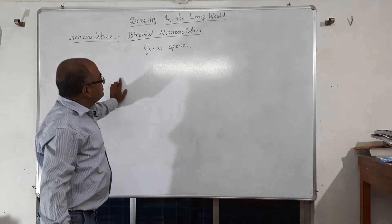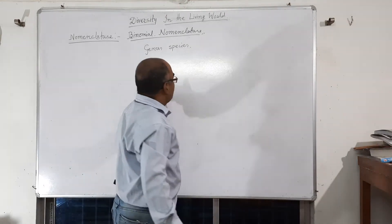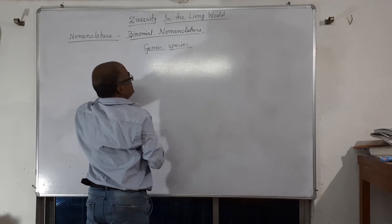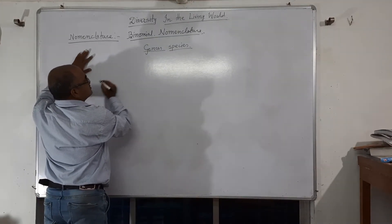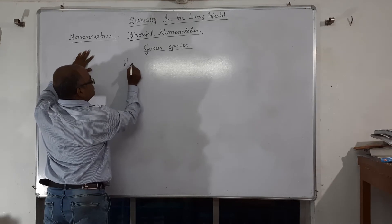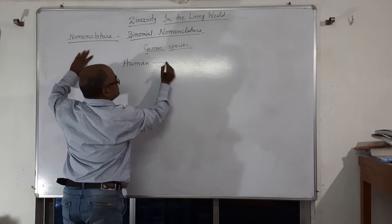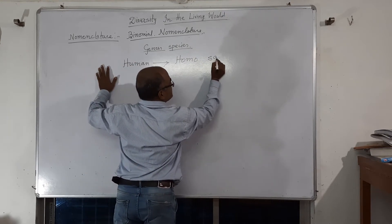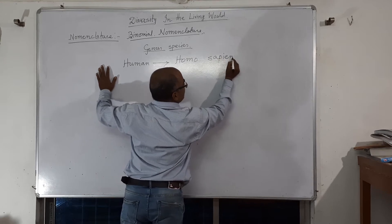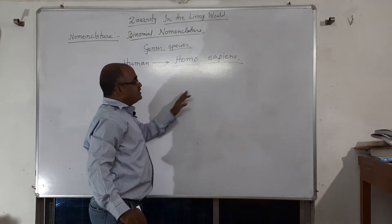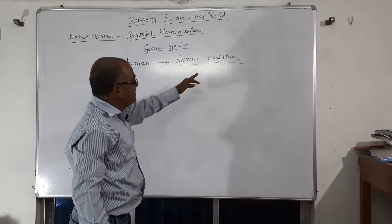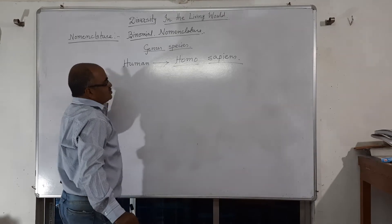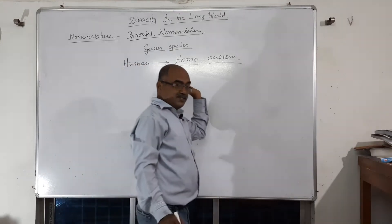So one living thing has two parts: genus and species. For example, human being is Homo sapiens — H-O-M-O, S-A-P-I-E-N-S. So here, Homo is the genus and sapiens is the species. Likewise, mango is Mangifera indica. So like this, scientific names were established.